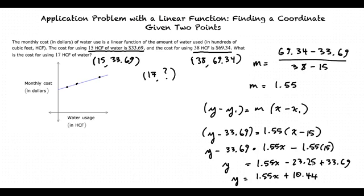Now that we have our equation, we can plug 17 in for X to get our Y value, which is the cost. So we have Y equals 1.55 times 17 plus 10.44.